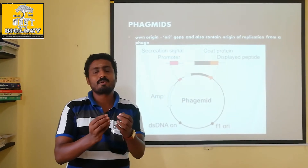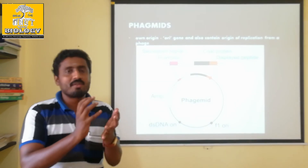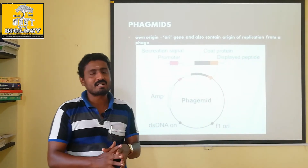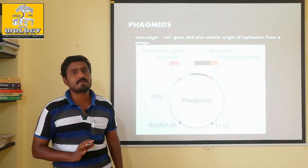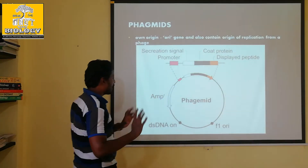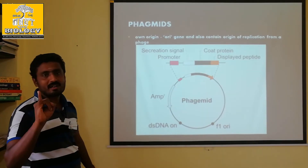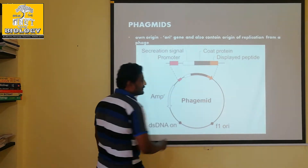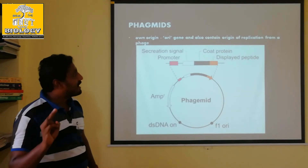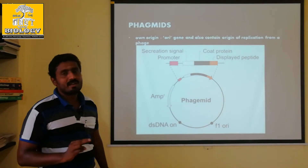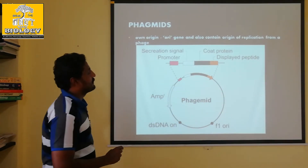The enzymes involved are helicase, DNA polymerase, and topoisomerase. These enzymes are produced at the origin — that gene is in the phage DNA. Ampicillin resistant is derived from bacteria. F1 ORI — bacteriophage origin of replication from the bacteriophage virus.